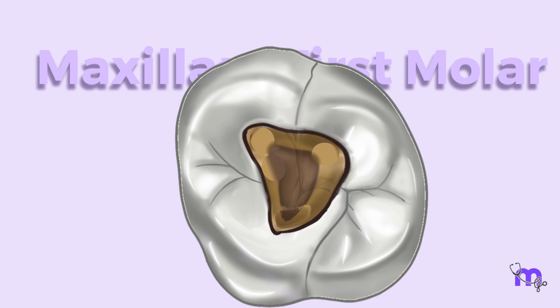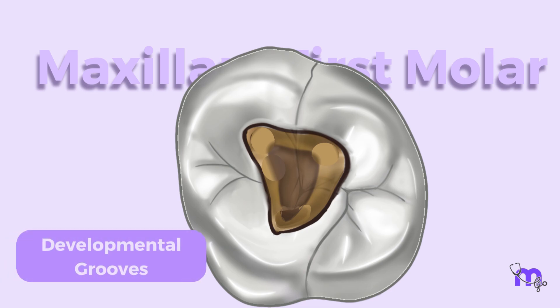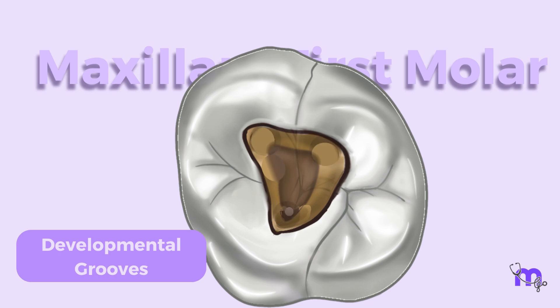Anatomical dark lines called developmental grooves connect the three orifices at three angles on the floor, the palatal orifice being the largest and first to be located.